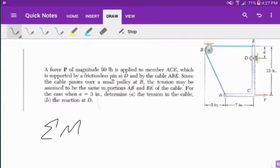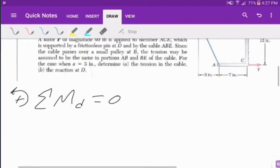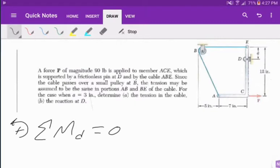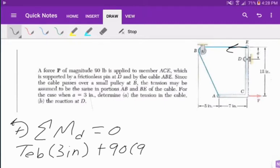So I want to sum my moments about D to get rid of the X and the Y component. I'm going to sum my moments about D and say that counterclockwise is positive. We're going to set all this equal to zero because it's statics and things do not move. We have the tension EB acting a distance of 3 inches, so tension EB times 3 inches. And we're going to add 90 times 9 inches since it's 12 minus 3.